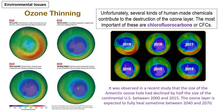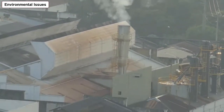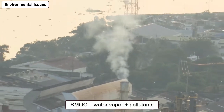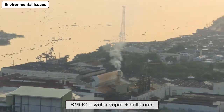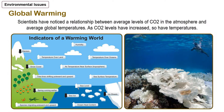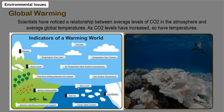Aside from ozone thinning, we are also suffering from air pollution. In many urban areas, the air is visibly polluted with smog — water vapor mixed with chemicals that result from human activities, including burning fossil fuels and using chemicals in vehicles, homes, and industries. Scientists have noticed a relationship between average levels of carbon dioxide in the atmosphere and the average global temperatures. As carbon dioxide levels have increased, so have temperatures. These are the indicators of a warming world: ice will melt, we will have sea level rise affecting coastal areas, and disruptions in temperatures can also create low pressure zones and typhoons.